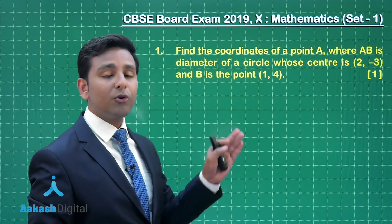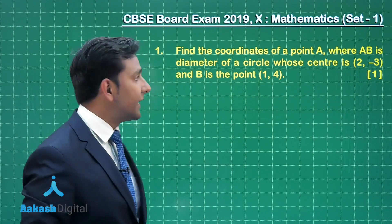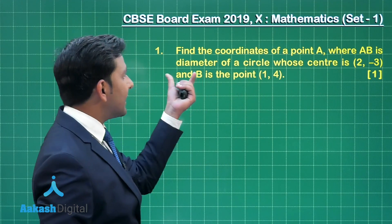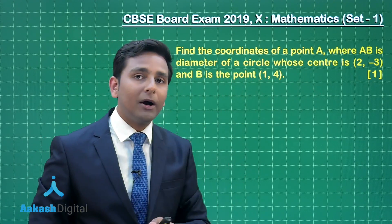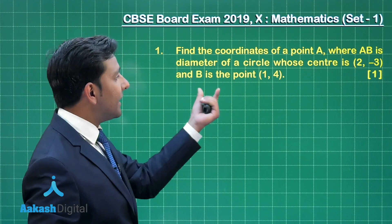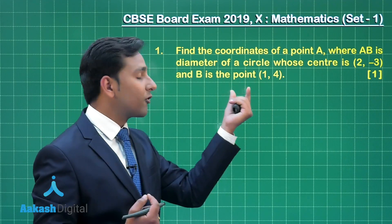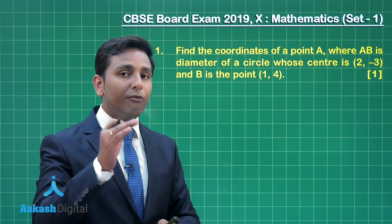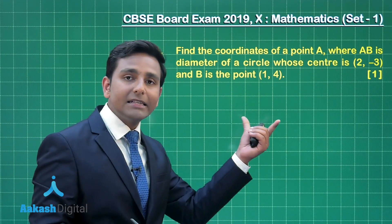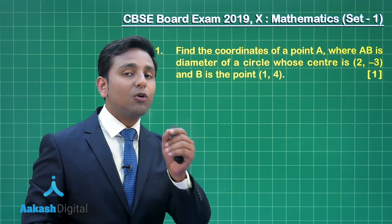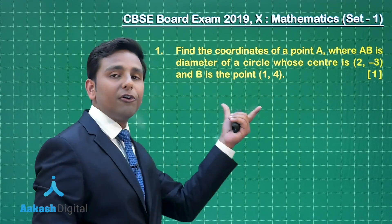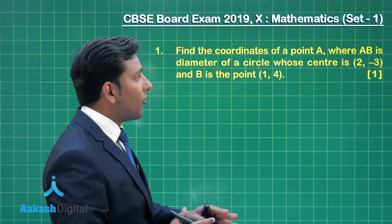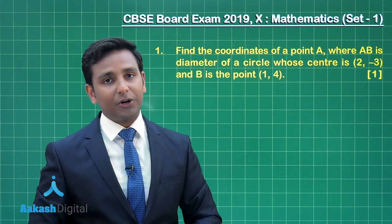This question is from coordinate geometry. It states: find the coordinates of point A, where AB is the diameter of a circle whose center is (2, -3) and B is the point with coordinates (1, 4). We have the coordinates of one end of line segment AB as well as the coordinates of the midpoint. We will obtain the coordinates of point A using the midpoint theorem.